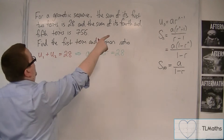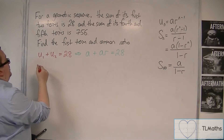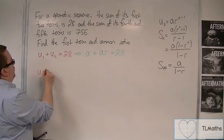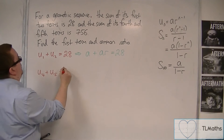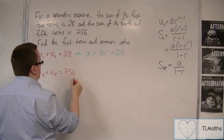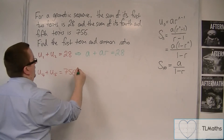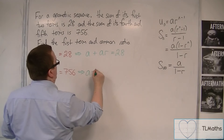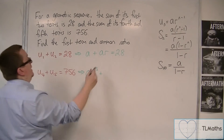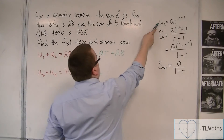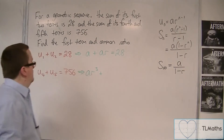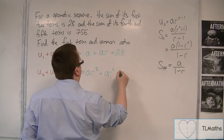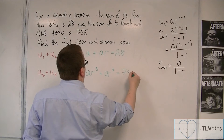We're also told the sum of its fourth and fifth terms is 756, so the fourth and fifth terms add up to 756. The fourth term is ar³, using this formula here, and the fifth term is ar⁴, and that equals 756.